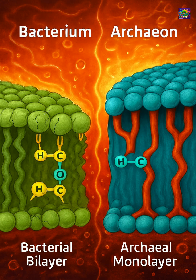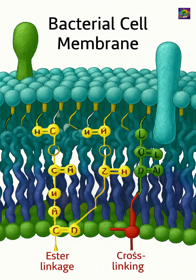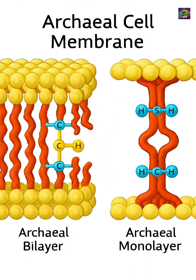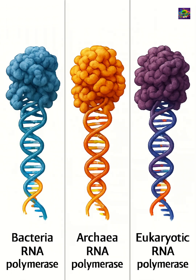Their cell membranes are also fundamentally different. Bacteria have membranes made of fatty acids linked to glycerol by ester bonds. Archaea, on the other hand, use ether bonds and sometimes even build monolayer membranes, giving them exceptional stability. This allows many archaea to survive in extreme conditions, from boiling hot springs to highly acidic lakes and deep-sea hydrothermal vents.